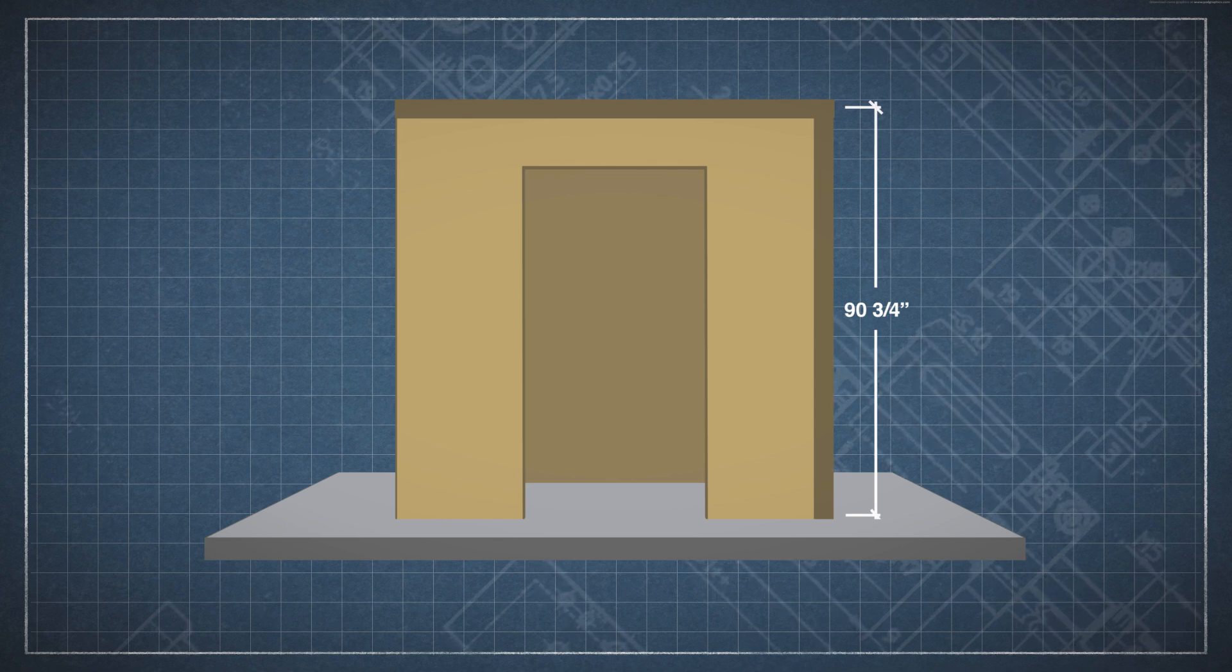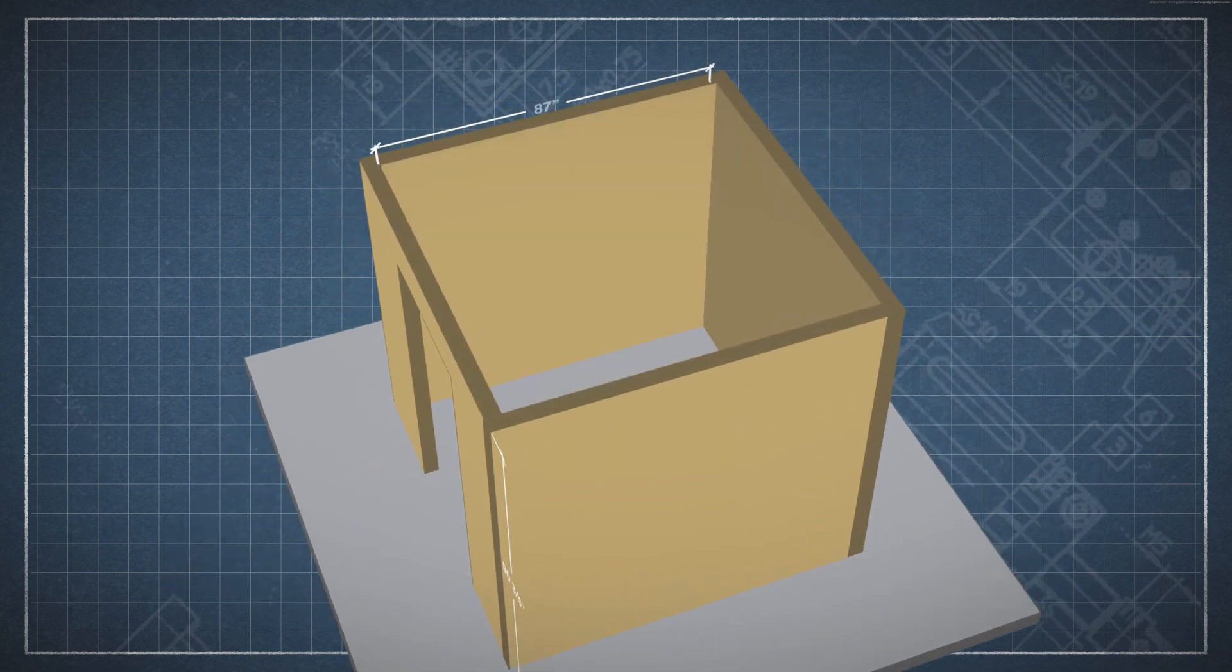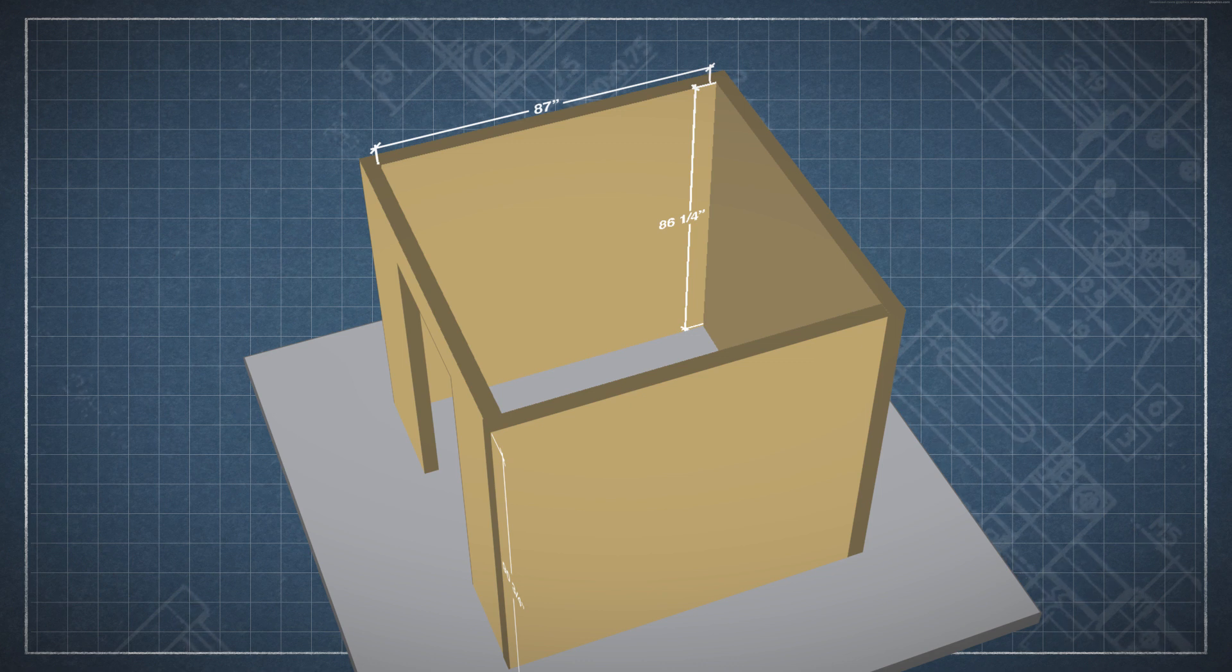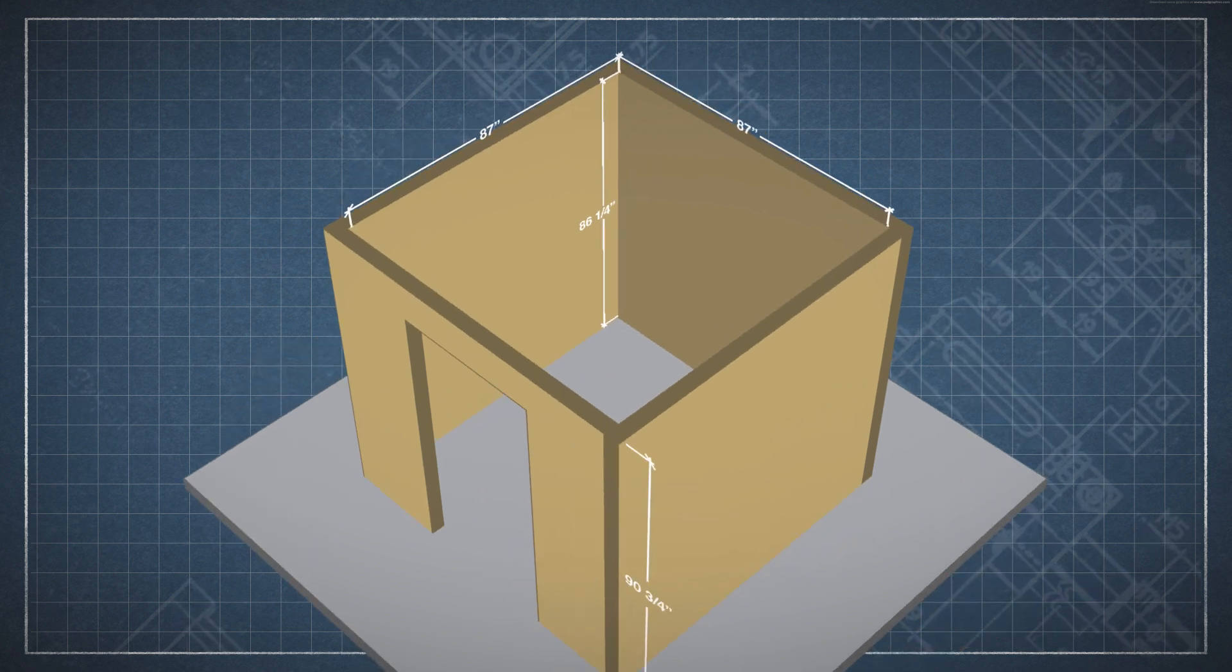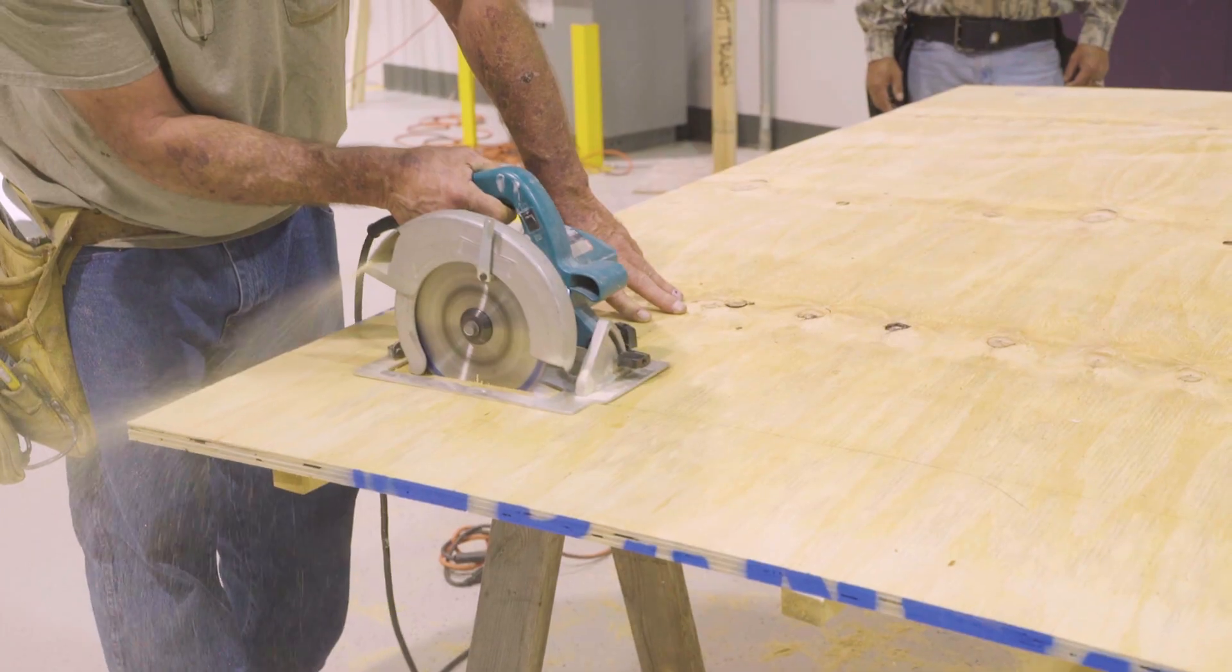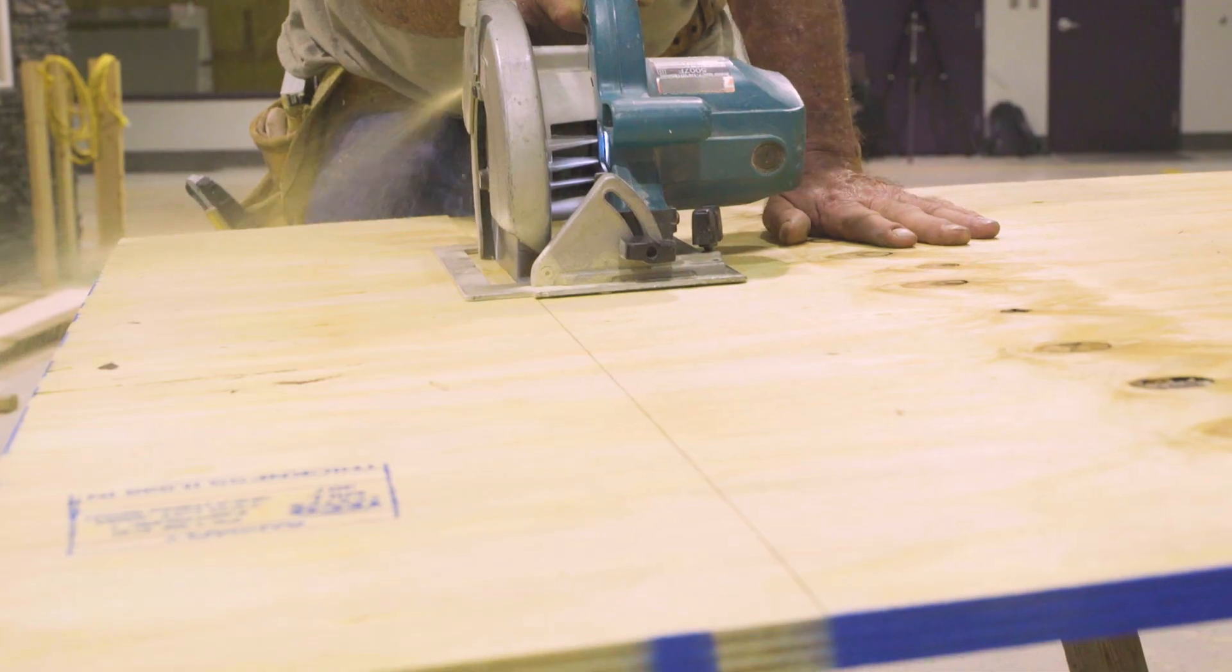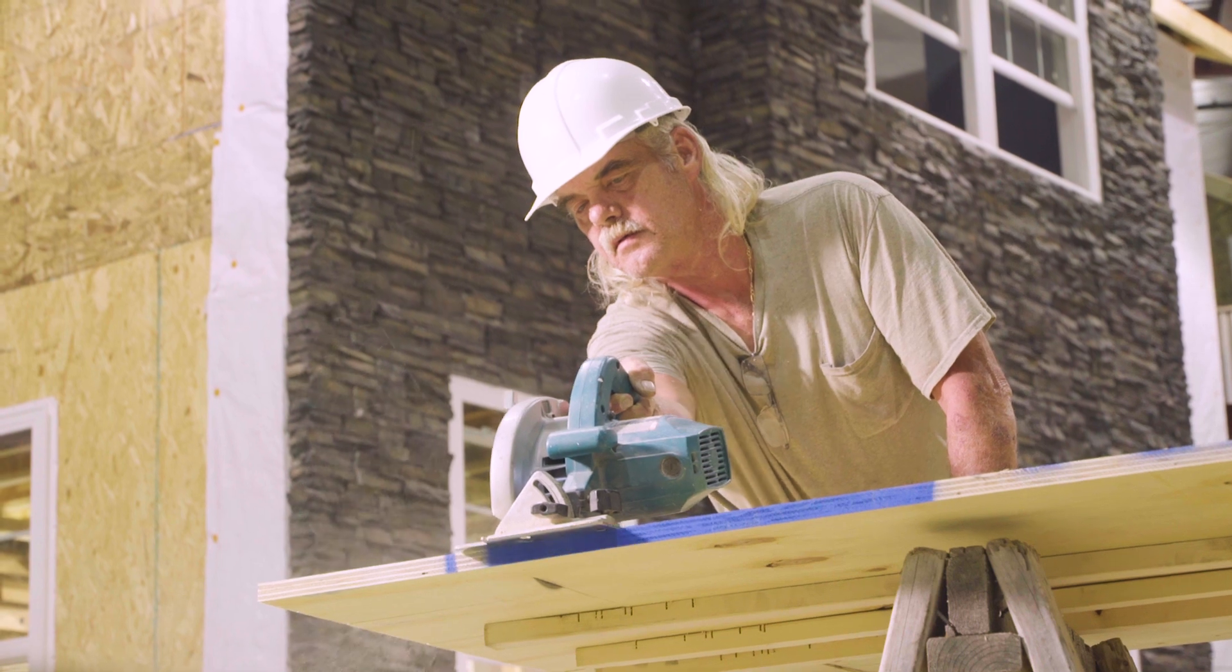The surface of each interior wall measures 87 inches wide by 86¼ inches high. The ceiling measures 87 inches by 87 inches in the interior of the room. The individual sheets of plywood are cut to the dimensions necessary to cover the surface where they will be installed.